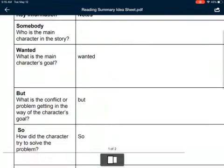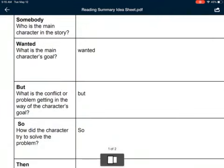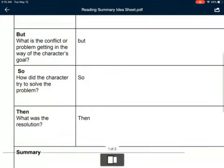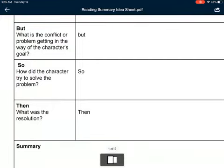The next section is Wanted: what is the main character's goal? Then we have But: what is the conflict or problem getting in the way of the character's goal? So: how did the character try to solve the problem?